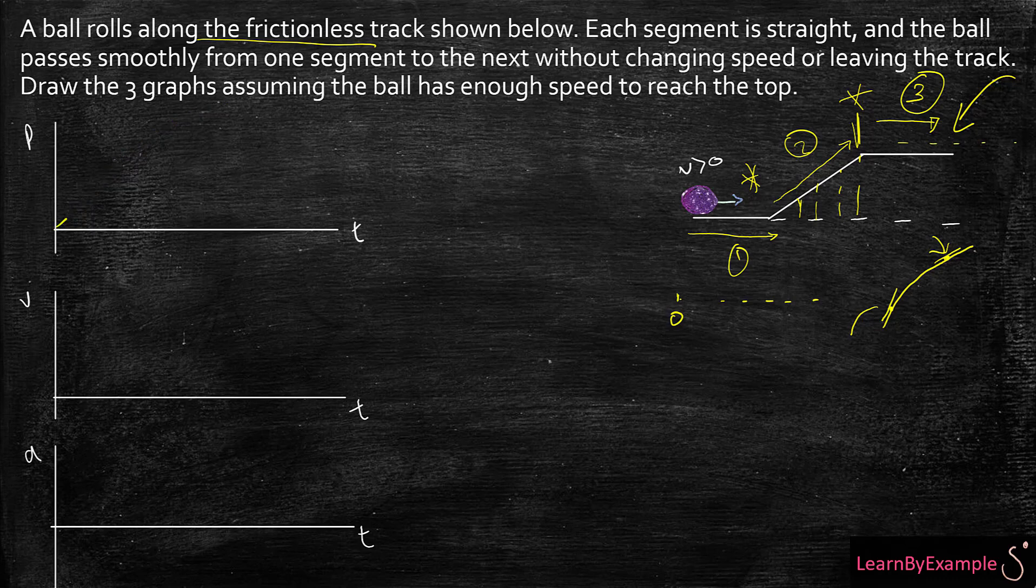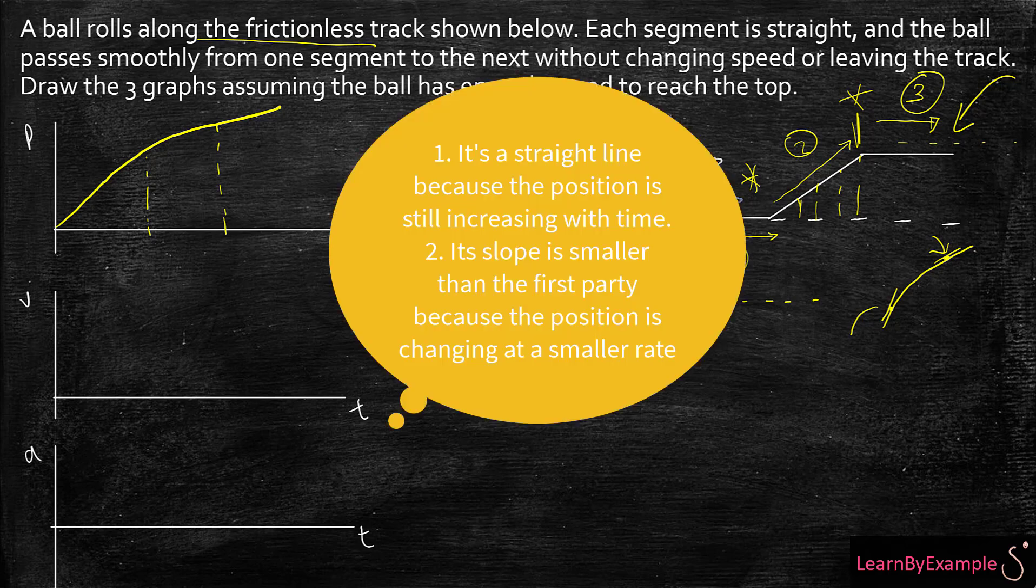If I were to graph this better, so for this part there will be a straight line. For this part it would be a curved line, and this part it would still be a straight line, but with a smaller slope.